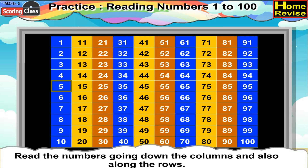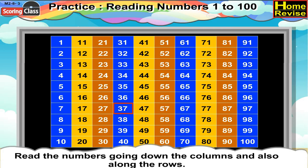The next row begins with 5. The next number is 5 plus 10, that is 15. And similarly, the next numbers are 25, 35, 45, 55, 65, 75, 85, 95. The next row begins with 6. If you add 10 to it, the next number is 16. Similarly, it is 26, 36, 46, 56, 66, 76, 86, 96. The next row begins with 7. If you add 10 to it, it becomes 17. So, the row continues as 27, 37, 47, 57, 67, 77, 87, 97.